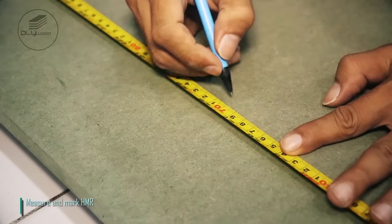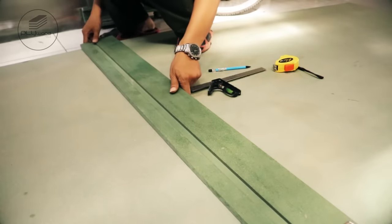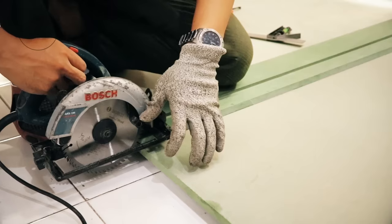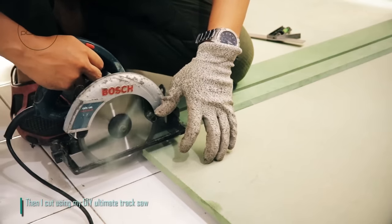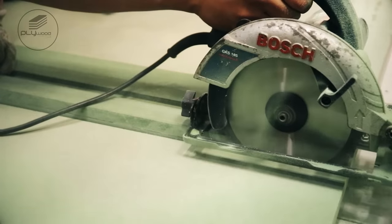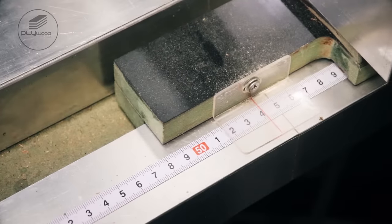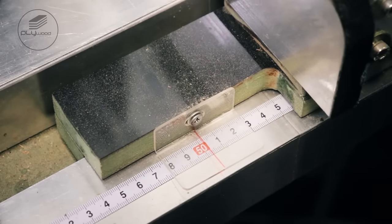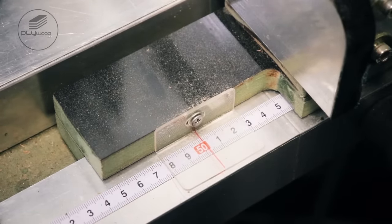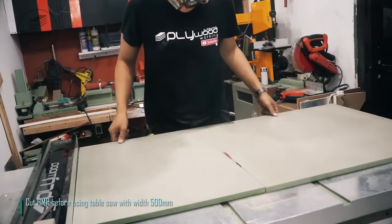Measure and mark HMR. Then I cut using my DIY ultimate track saw. Cut HMR before using table saw with width 500 millimeters.